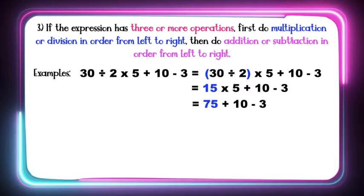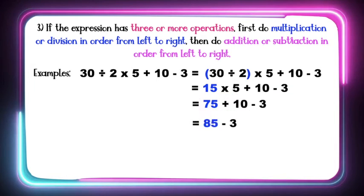Which comes first, addition or subtraction? That is addition from the left. Remember, we start from left to right. So 75 plus 10 is equal to 85. Now we can subtract. 85 minus 3 is equal to 82. So 30 divided by 2 times 5 plus 10 minus 3 is equal to 82.